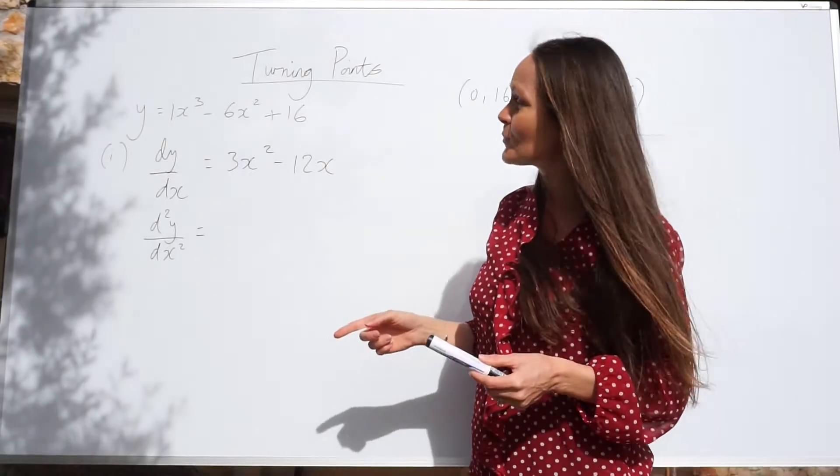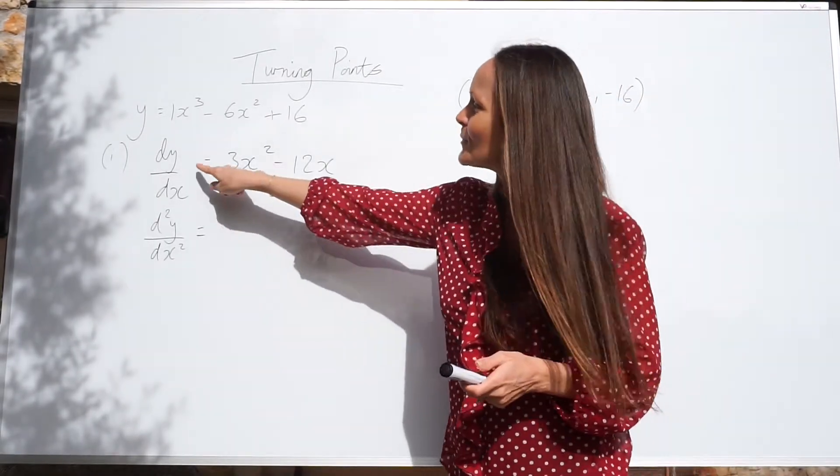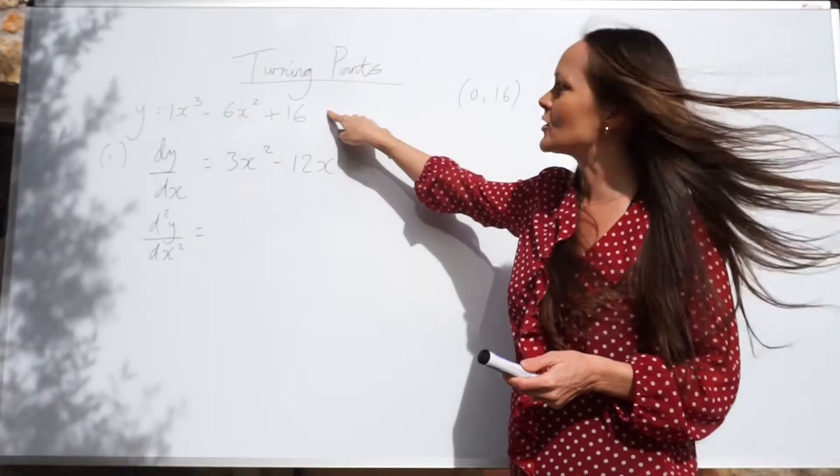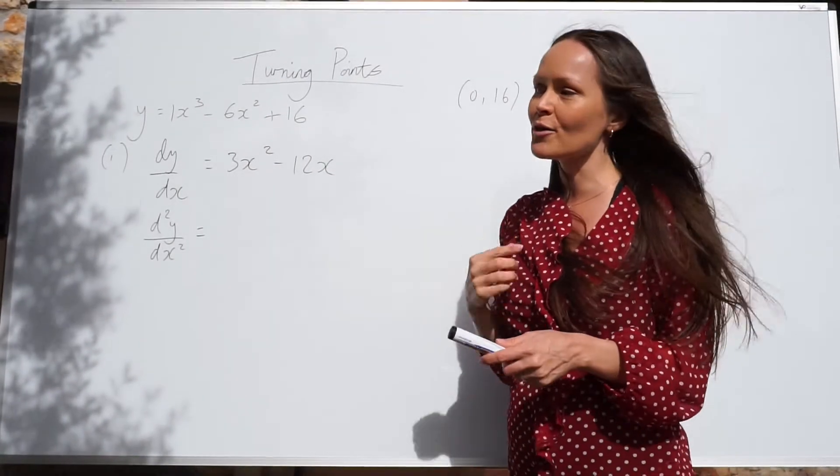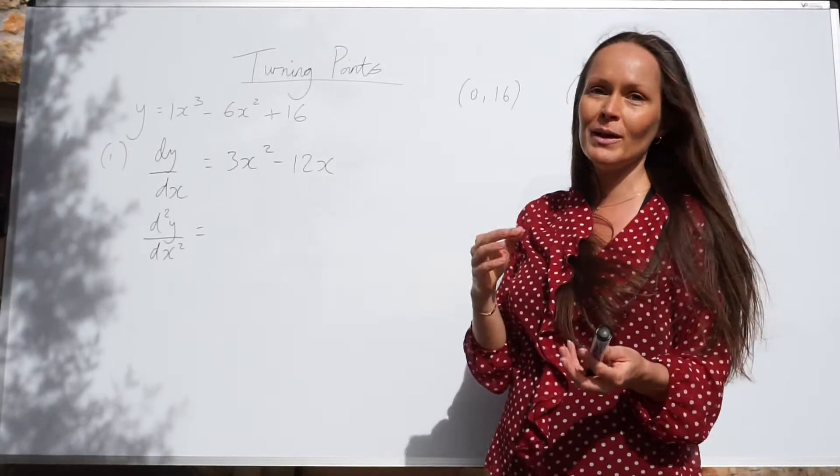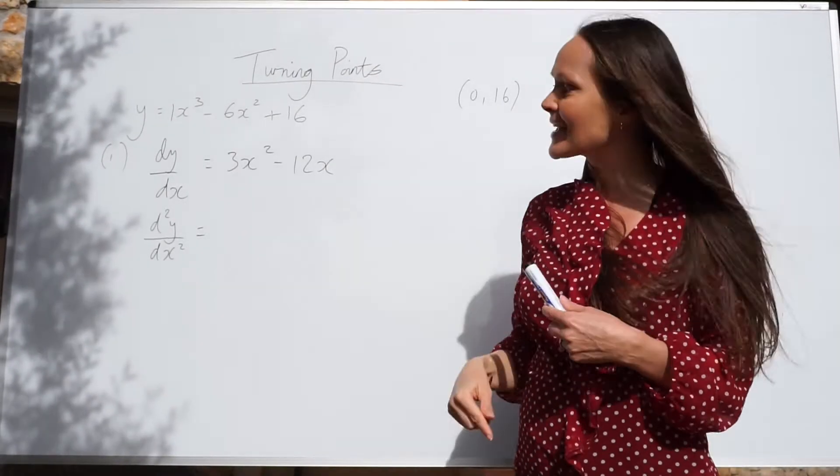In the first part of the question, we worked out dy/dx. We differentiated this equation to find 3x squared minus 12x. To work out whether the points are either maximum or minimum, you need to differentiate again.